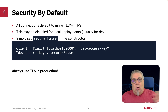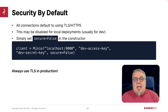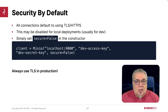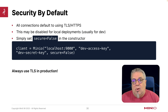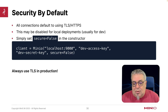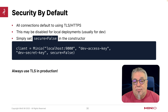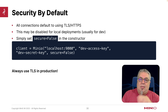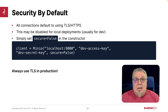By default, all connections are going to use TLS. If you want to use something that is not TLS — if you're doing a development environment and you don't have the certificates — you can do secure=False. Don't do it in production. You can definitely do secure=False if you're just testing something, but it's the last thing you want to add — in more than one way.